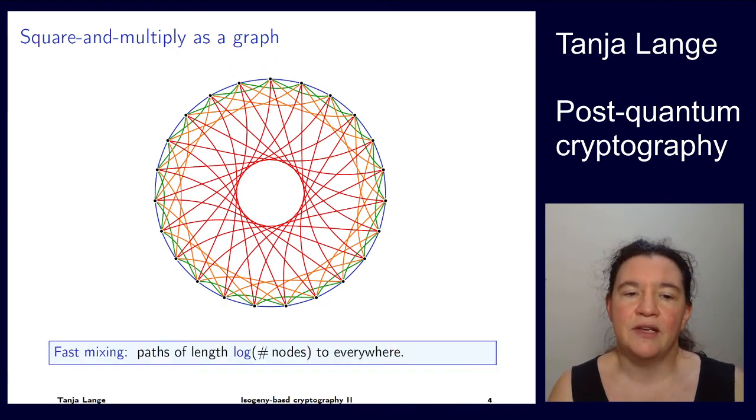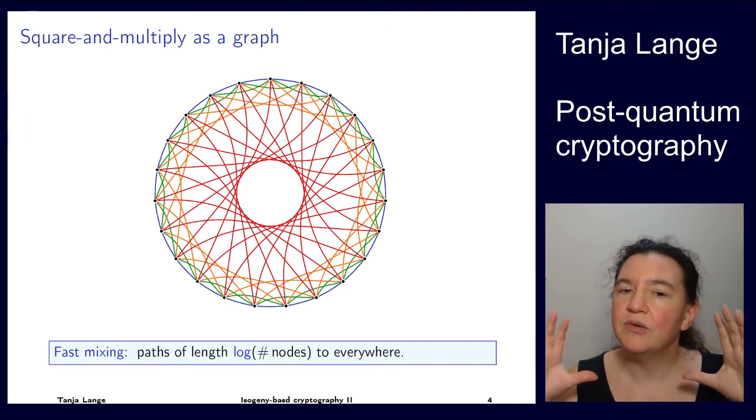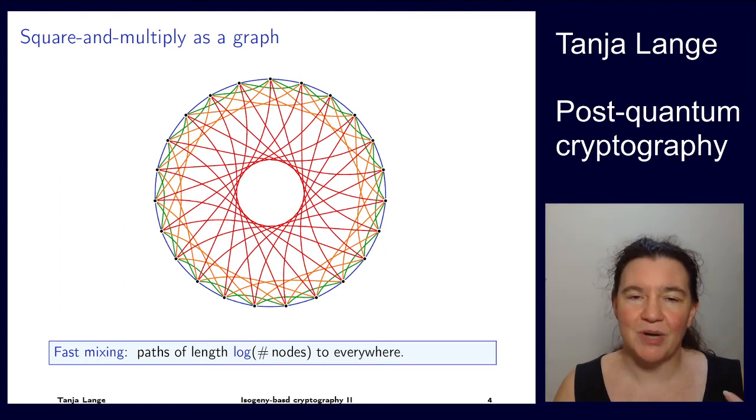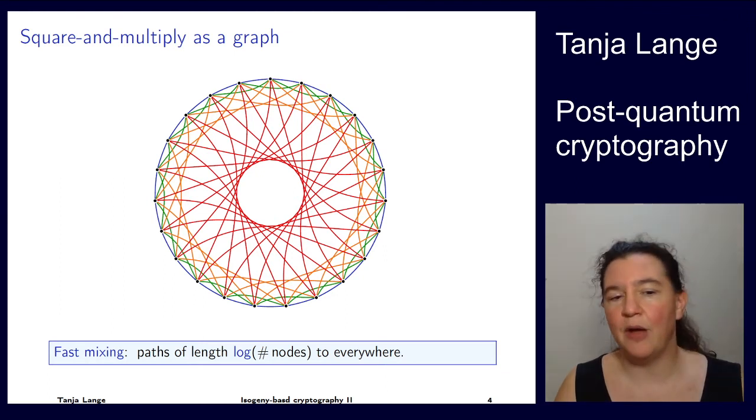And this graph has a property which is called fast mixing. And that means that if you have a path of log the number of the nodes, you can reach any of the dots. Now, with square multiply, you know this because log the bit length is exactly how many steps you need, or how many squares you need, and they need roughly half as many of the multiplications. And if you have windows or whatever, you can go faster. But with log the number of nodes you can get anywhere in this graph. In general, this is called fast mixing when you have this property. And so we like such graphs. It's very nice if we can do Diffie-Hellman on such a graph.